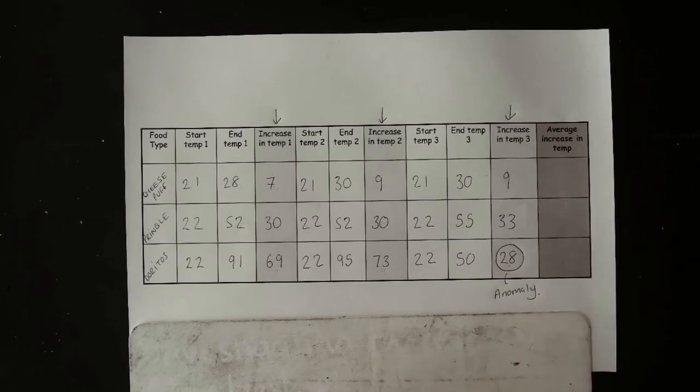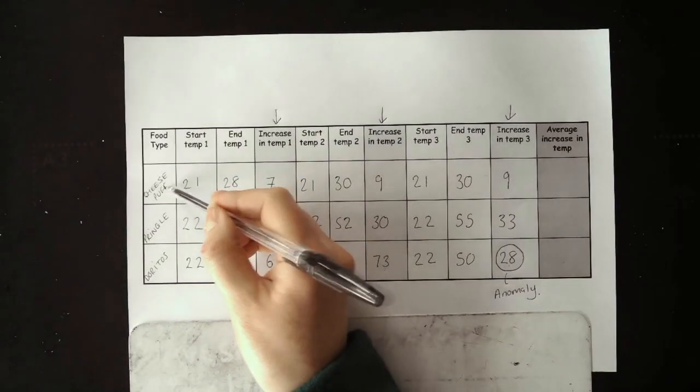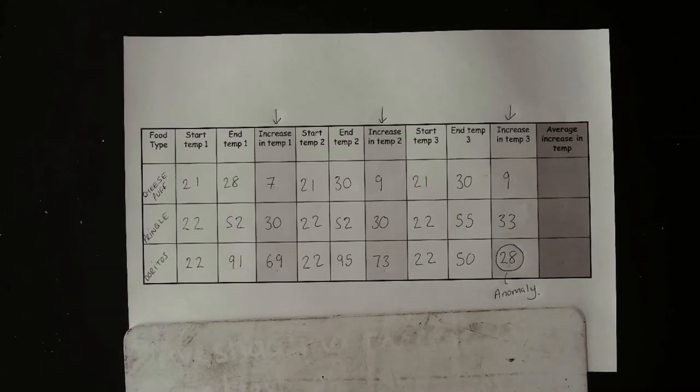Once you've worked out your averages, you can clearly see which of the crisps has got the most chemical energy.